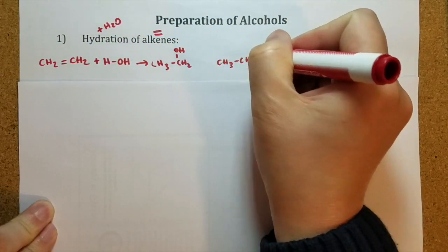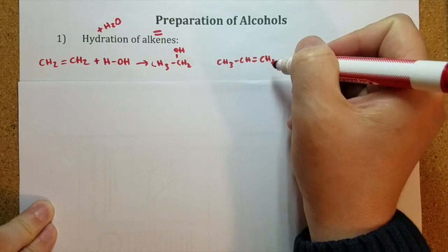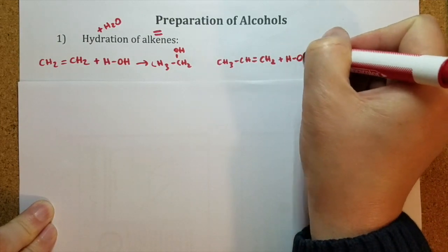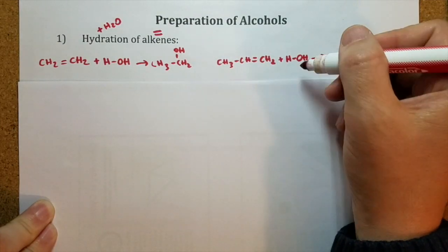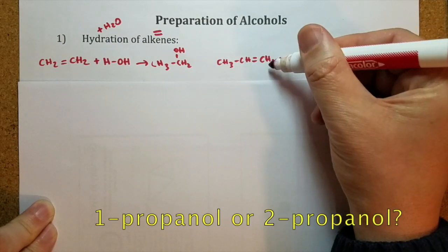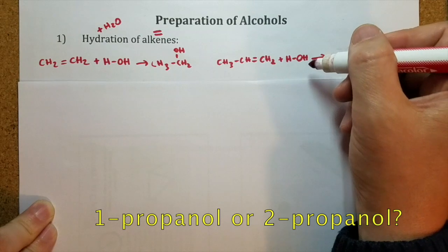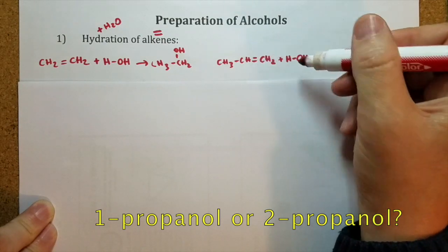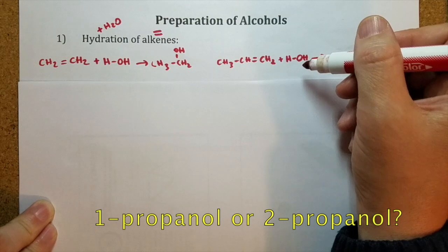Let's see the second case with propene. Propene is alkene with three carbon atoms. We again add water. But here we do have two cases. If you add OH group to the first carbon atom, the product will be 1-propanol. If you add OH group to the second carbon atom, the product will be 2-propanol.